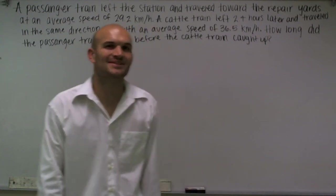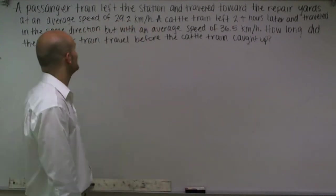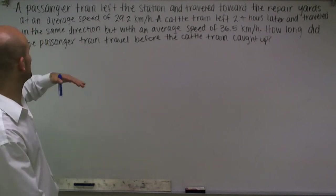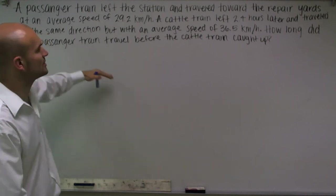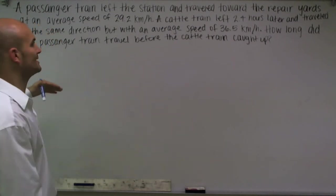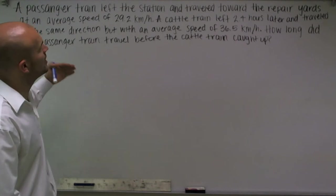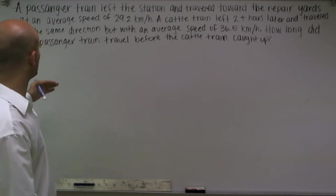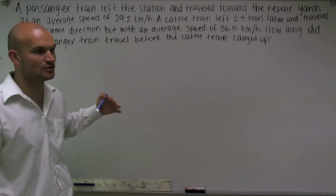Welcome. What I'd like to do is show you how to solve this distance rate problem. So the problem reads: a passenger train left the station and traveled toward the repair yard at an average speed of 29.2 kilometers per hour. A cattle train left 2.4 hours later and traveled in the same direction but with an average speed of 36.5 kilometers per hour. How long did the passenger train travel before the cattle train caught up?